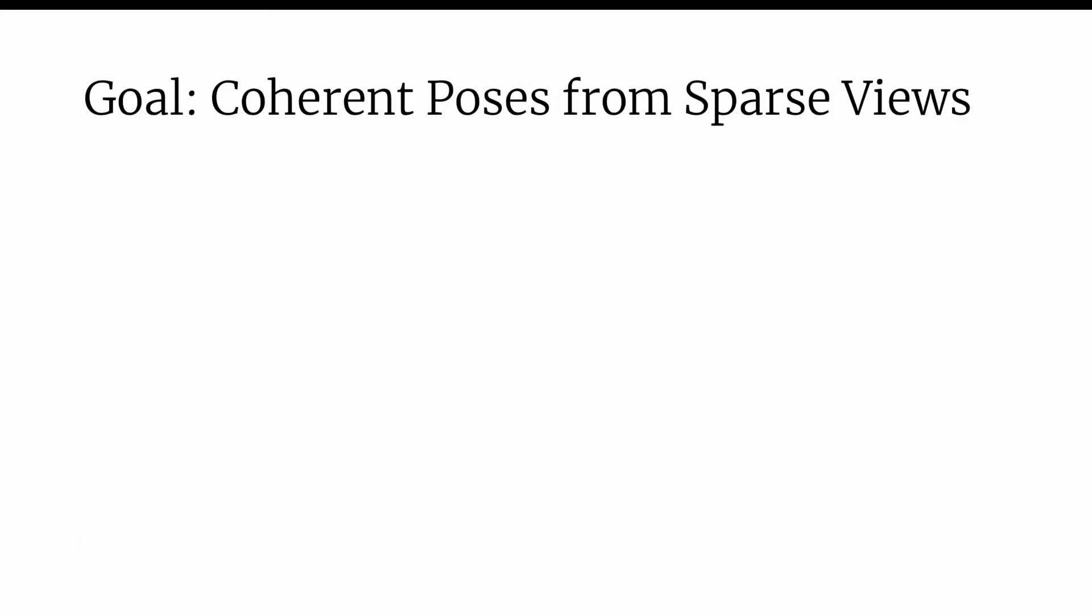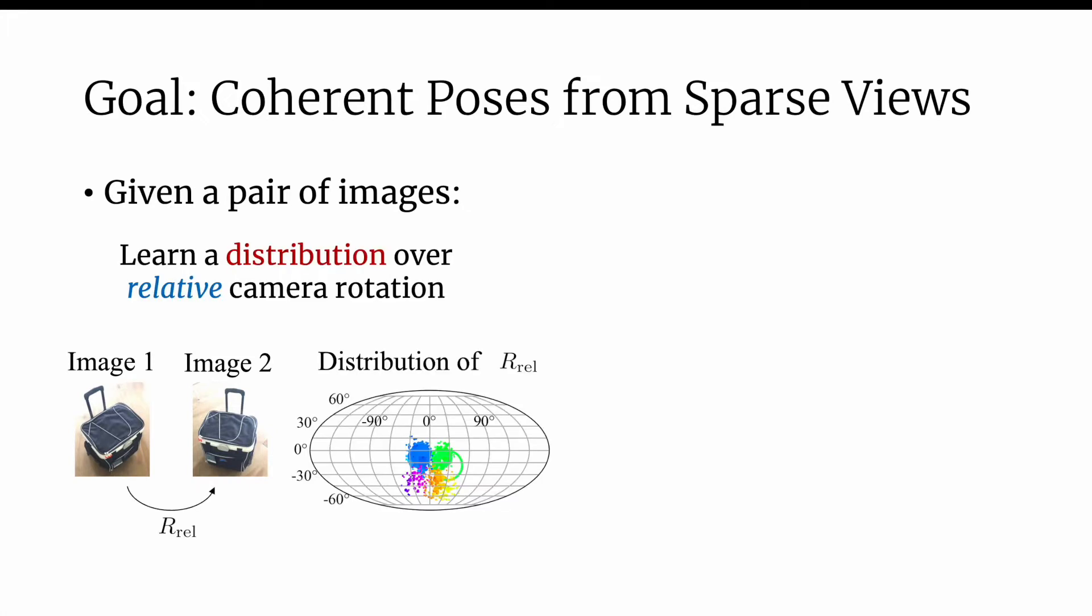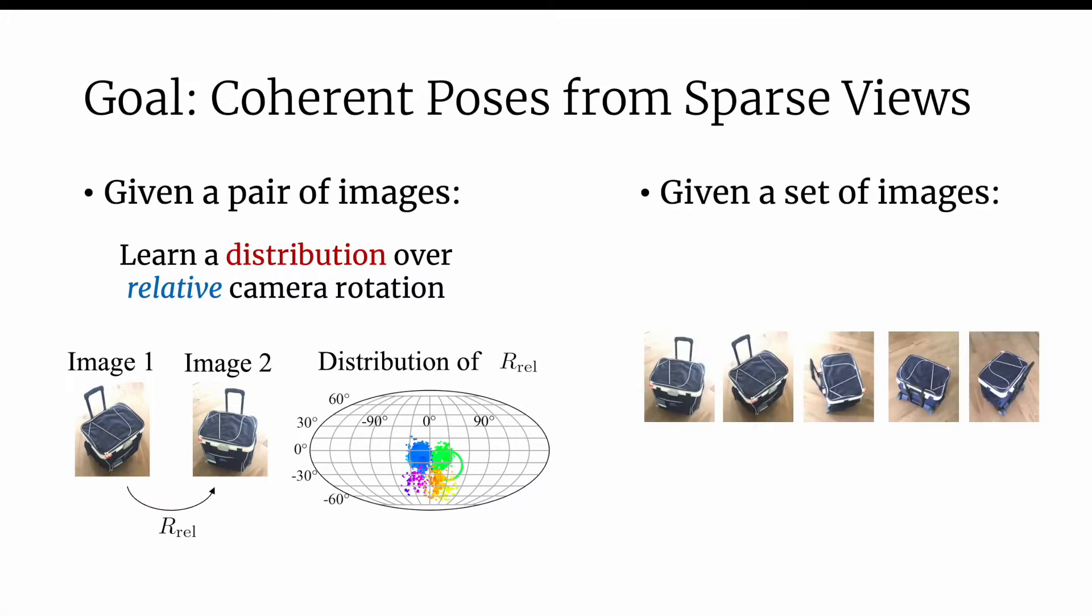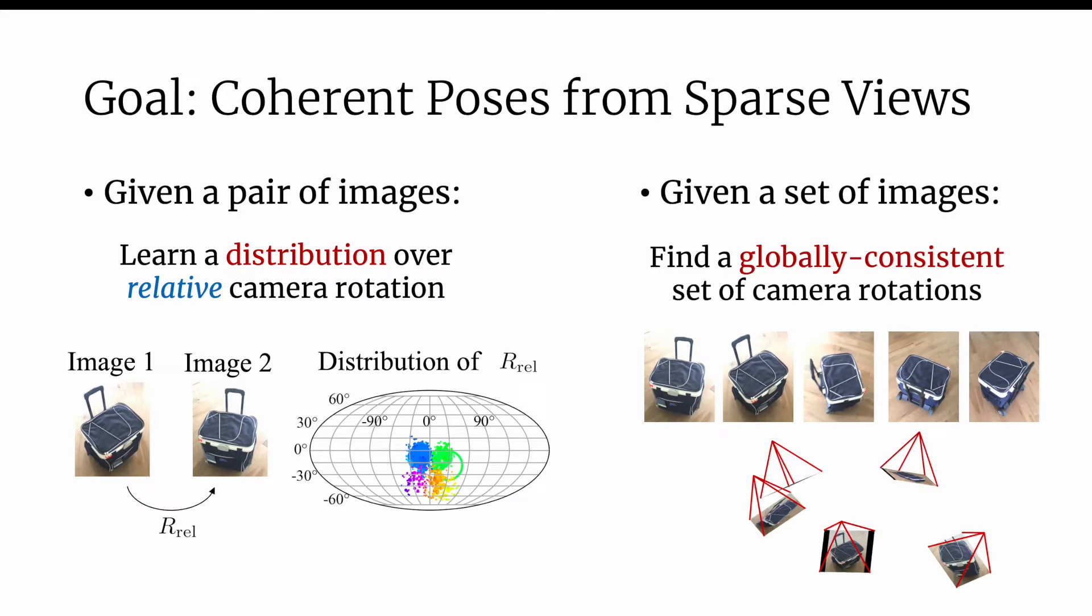Our goal is sparse view pose prediction. Given a pair of images, our approach learns a distribution over relative camera rotations, and given a set of images, finds a globally consistent set of camera poses. Let's begin with the former.